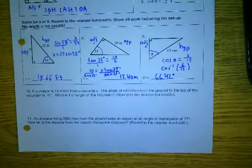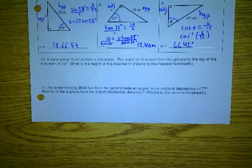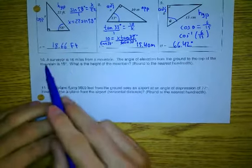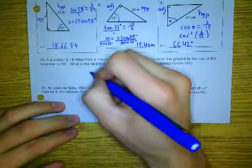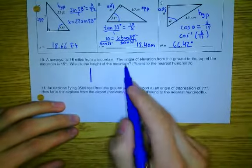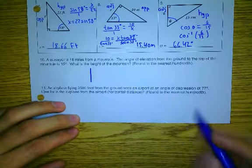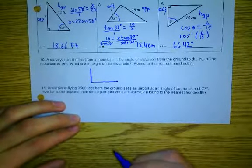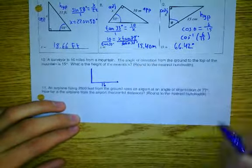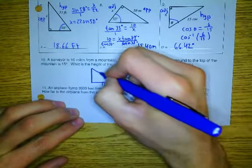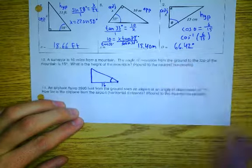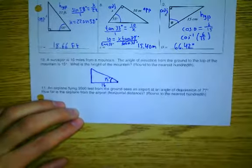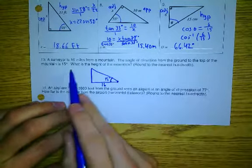Questions over any of those three problems? These were the most missed problems. I assume that they were going to be the most missed problems because I didn't give you a triangle. You had to draw your own. But let's talk about it. A surveyor is 16 miles from a mountain. So here's my mountain. The angle of elevation from the ground to the top of the mountain is 15. I'm going to pretend this is the surveyor. So from here to here is how much? 16. Angle of elevation, so that's if I'm standing here and I'm looking up, your angle of elevation is located right here. So that's going to be 15 degrees. It's asking you, what is the height of the mountain? So this was your mountain and you don't know the height. So that's going to be your X.